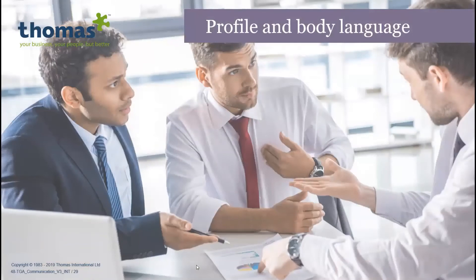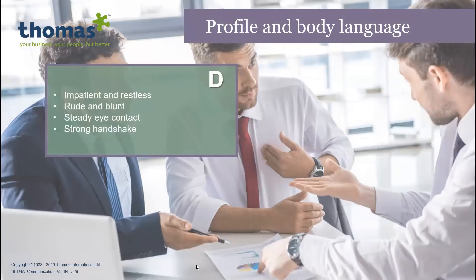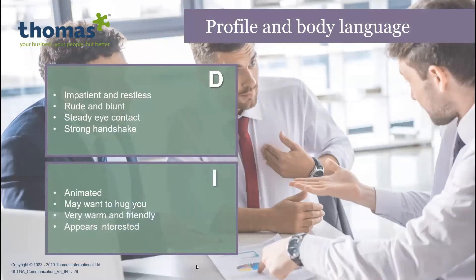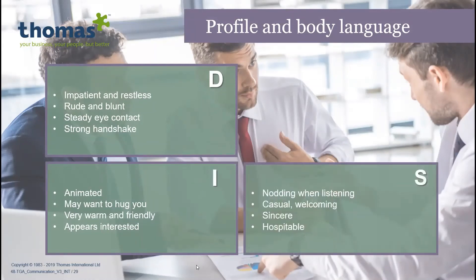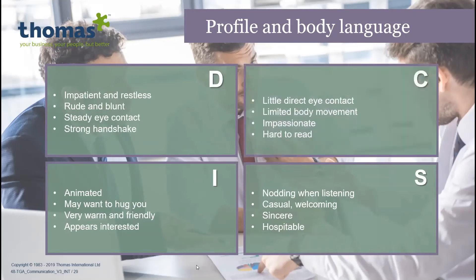Let's look at the body language of the different DISC profiles. People with high Dominance can be impatient and restless, and can come across as rude and blunt at times — they have very steady eye contact and a very strong handshake. People with high Influence are animated, may want to hug you, very warm and friendly, and very communicative and positive. People with high Steadiness will nod when listening to you — very casual, welcoming, sincere, and hospitable. People high in Compliance have very little direct eye contact, limited body movement, can come across as impassionate, and could be hard to read.